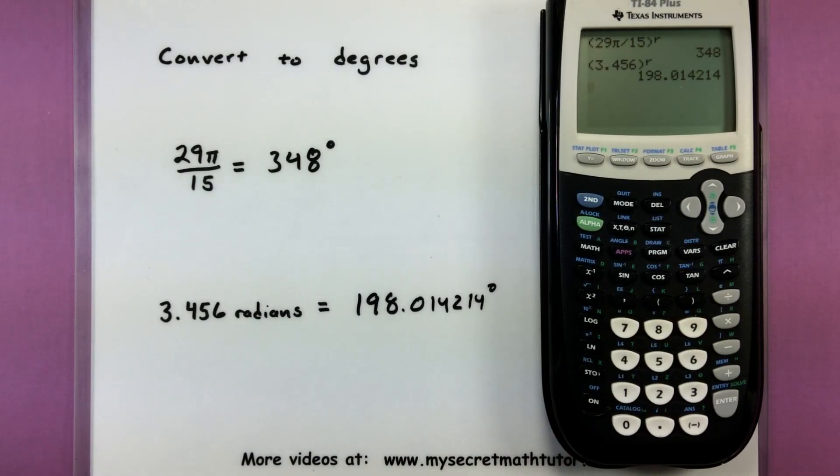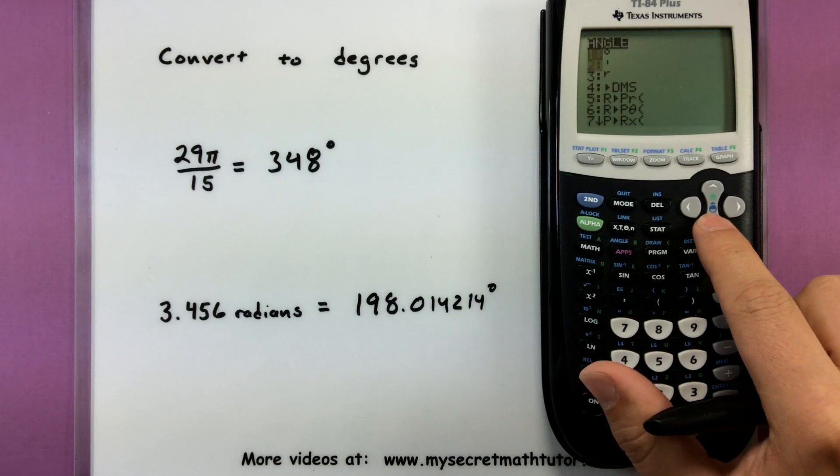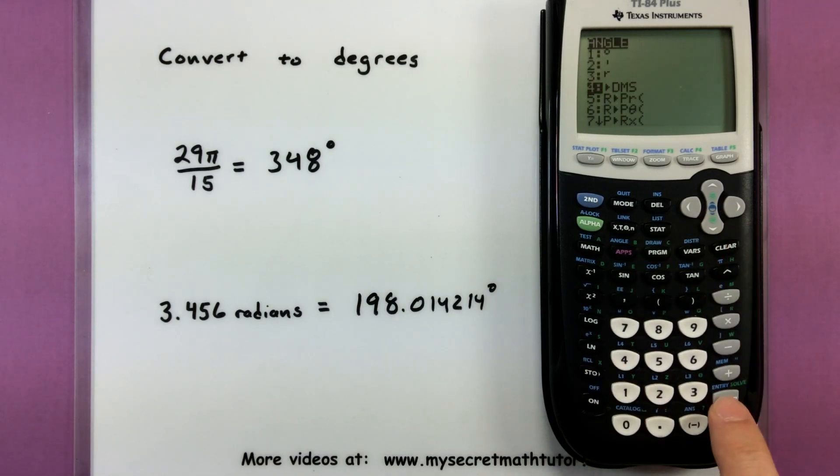Now in case someone wants you to also put that into degrees, minutes, and seconds, you can do that. You want to go to second angle. Look for your converting option. Degrees, minutes, seconds.